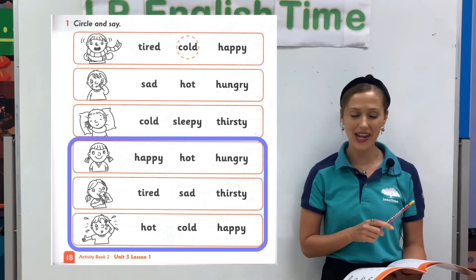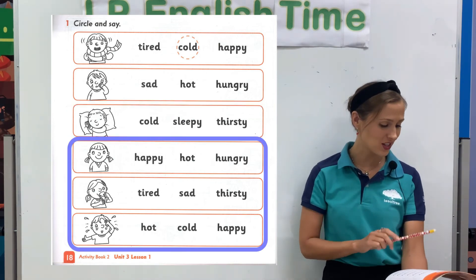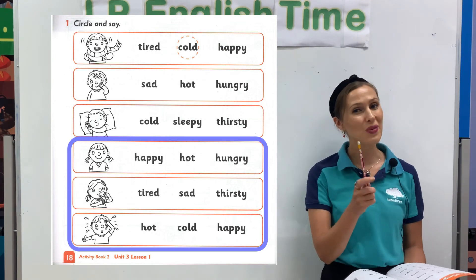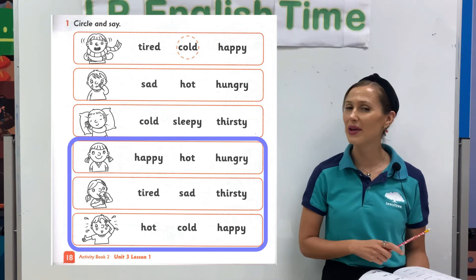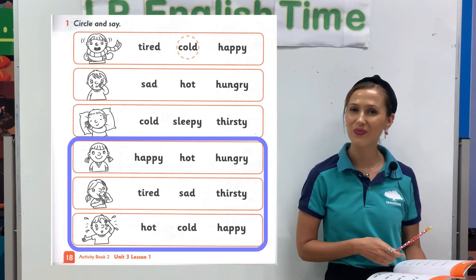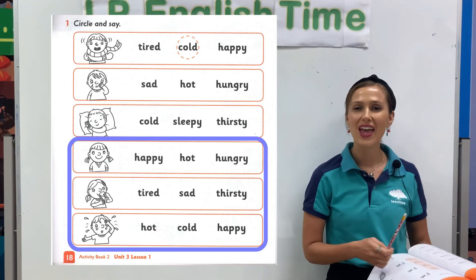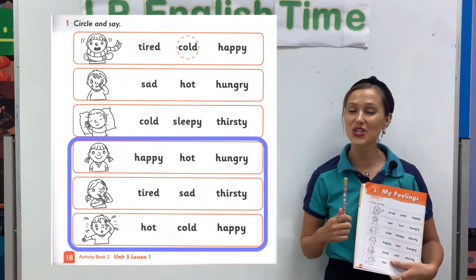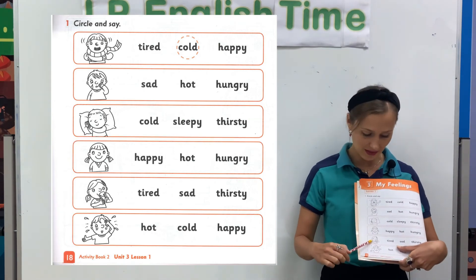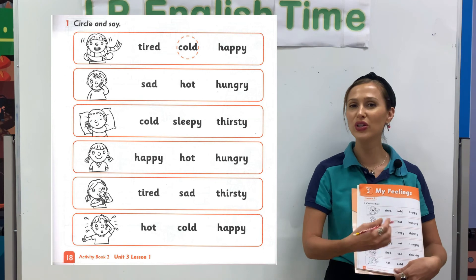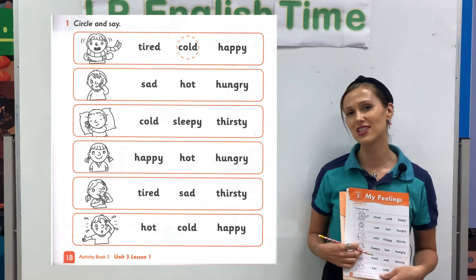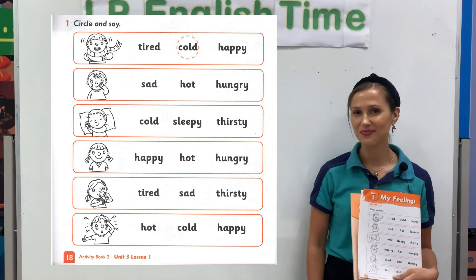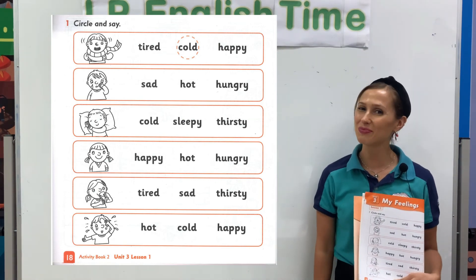Okay, we have one, two, three more pictures. I want you to do them all by yourself. When you are finished with page number 18 and you've circled all the correct words, you can color the pictures and make it beautiful.